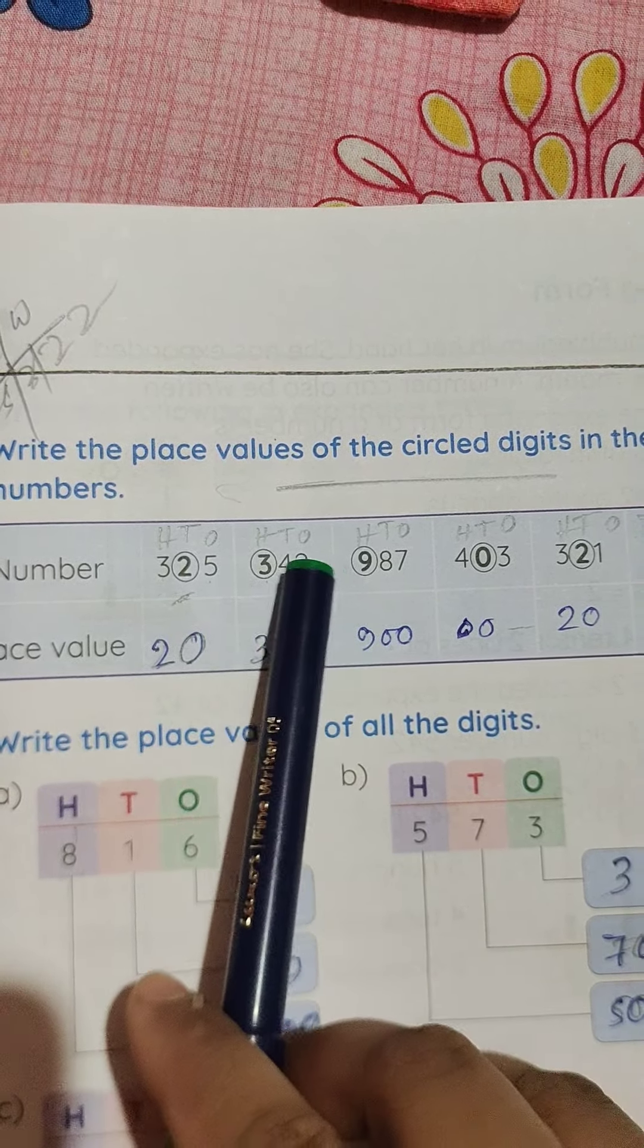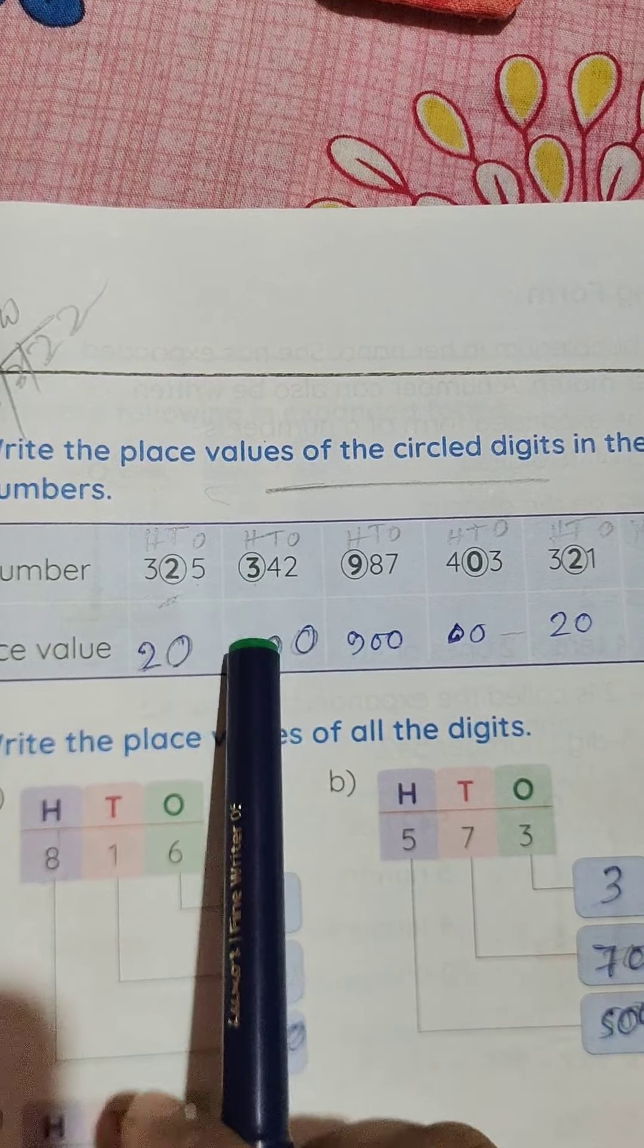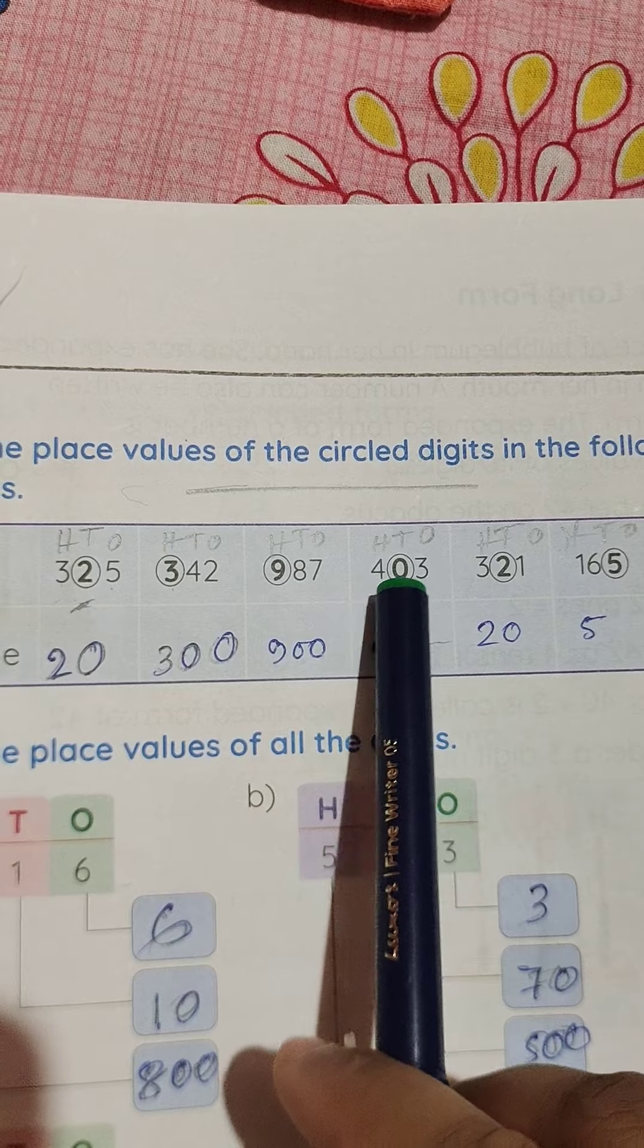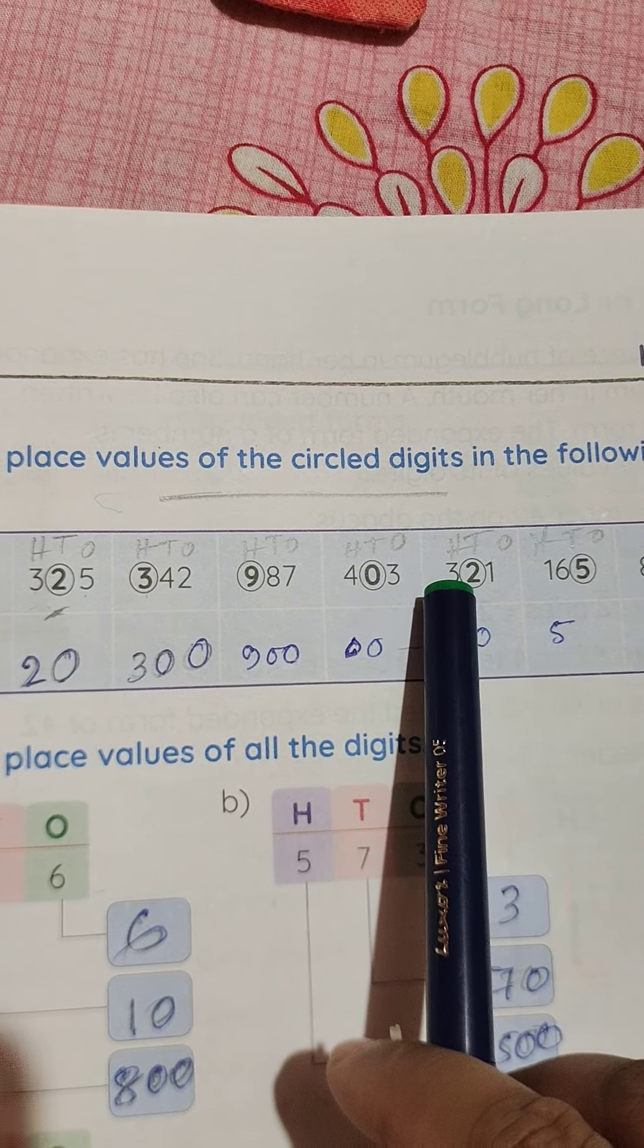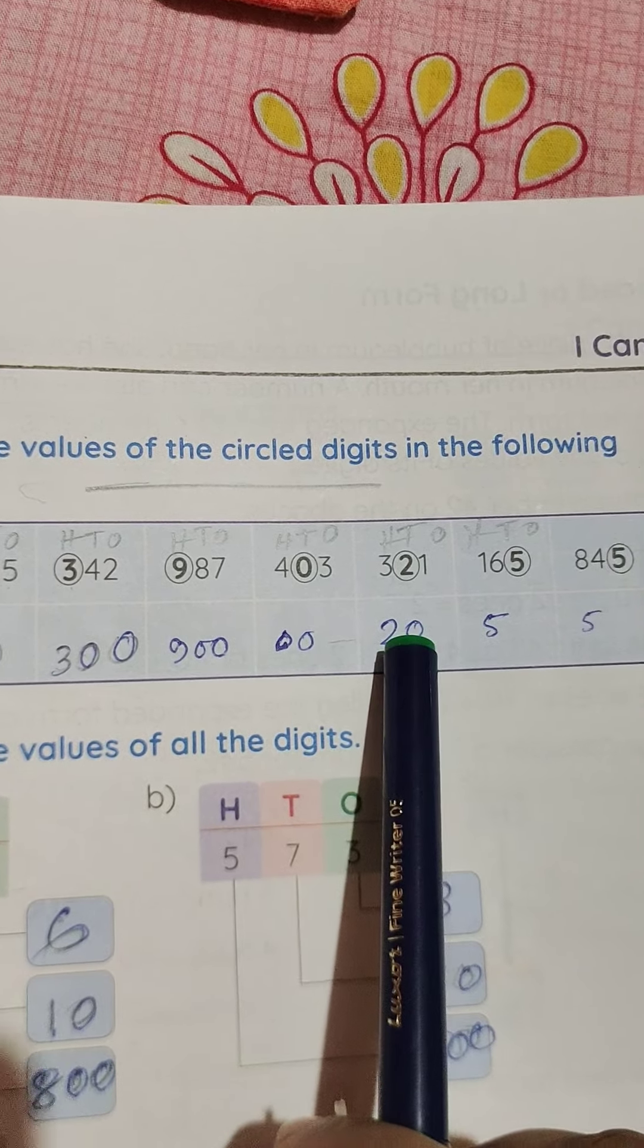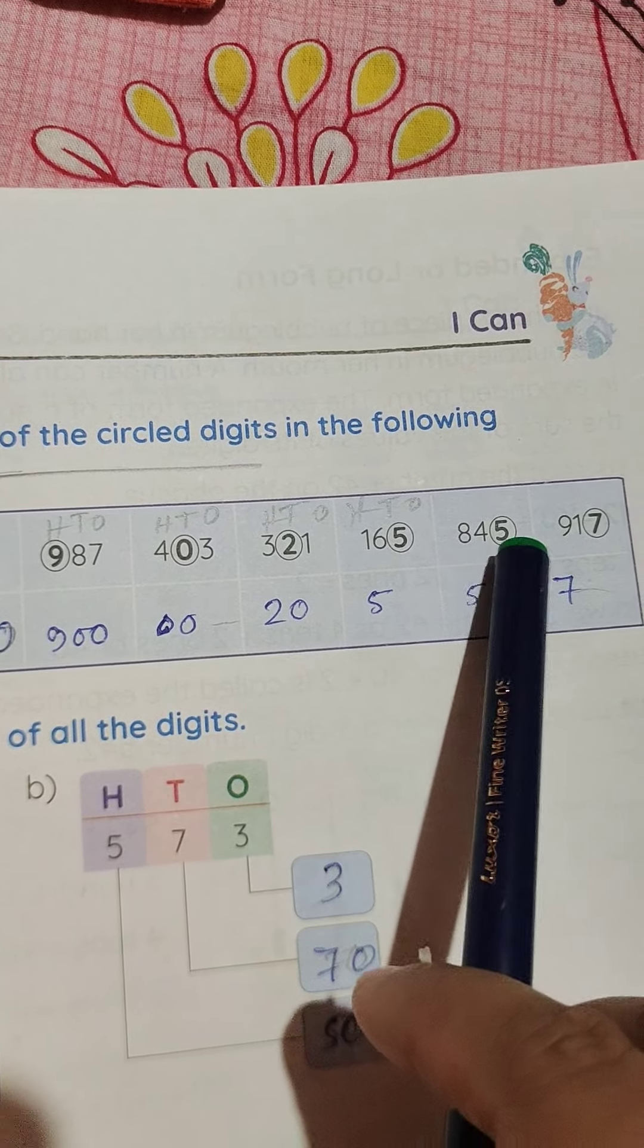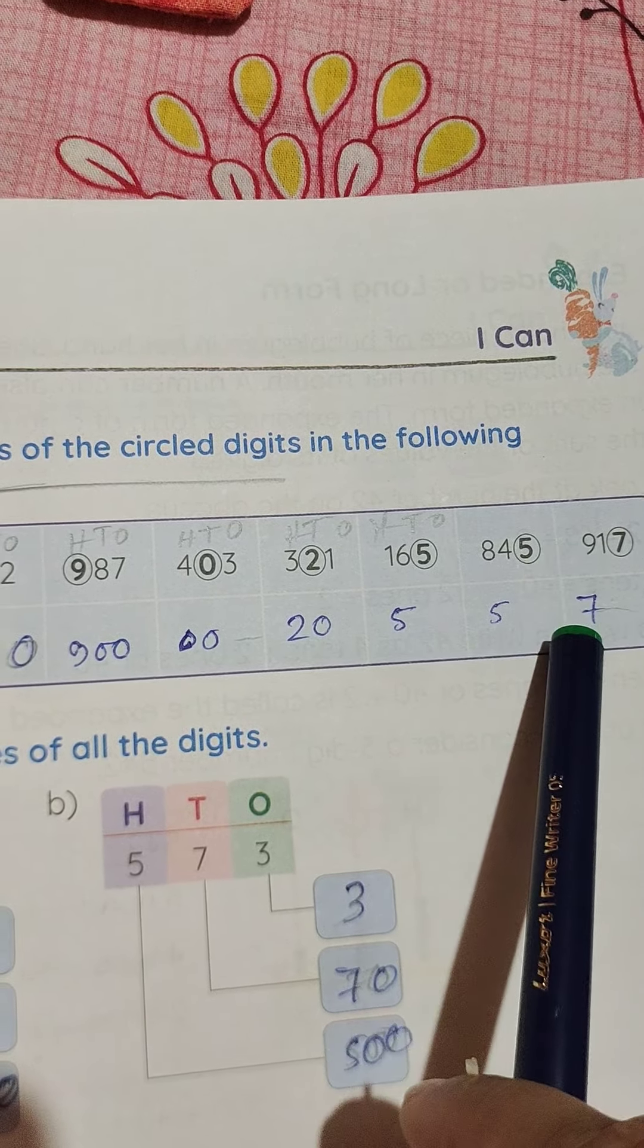3, 4, 2, it will be 300. 9, 4, 0, 3, it will be 0. 3, 4, 0, 3, it will be 0. 3, 5, 5, 8, 4, 5. 9, 4, 5, 9, 7, it will be 7.